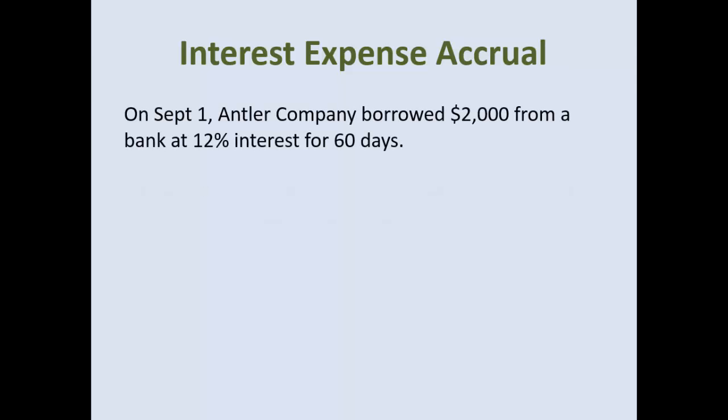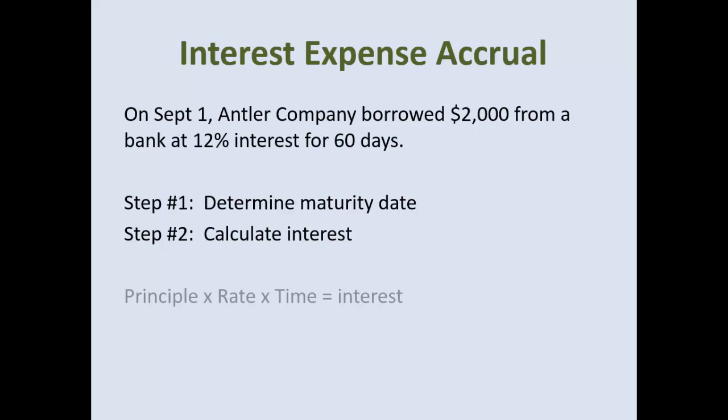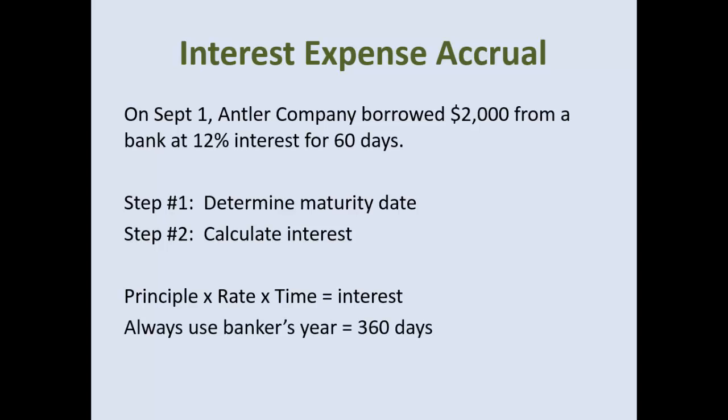Interest expense accrual: let's say on September 1st, Antler Company borrowed $2,000 from a bank at 12% interest for 60 days. First, determine the maturity date. Then calculate your interest — it's going to be principal times rate times time. The simplified way is to use a banker's year, or 360 days.